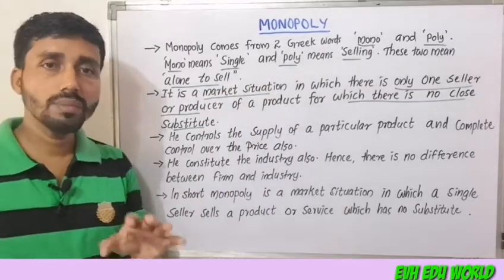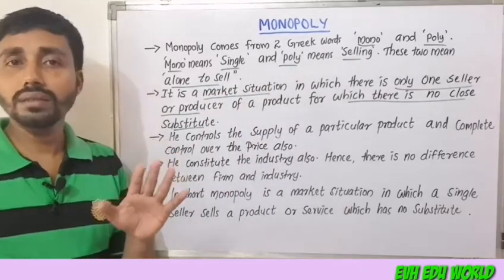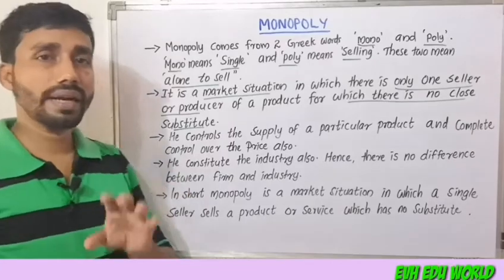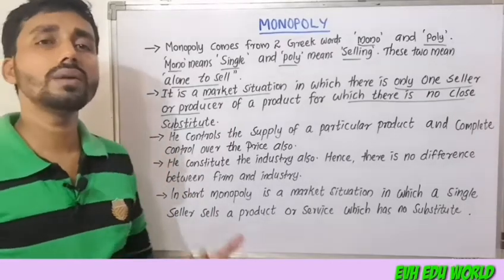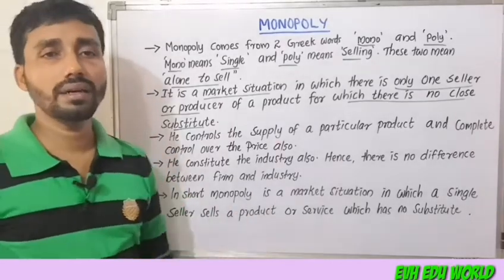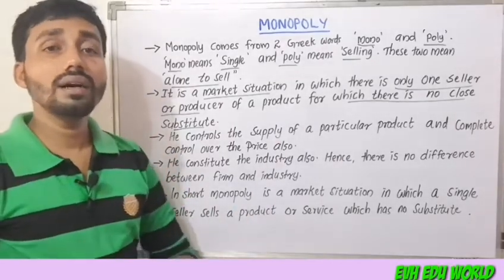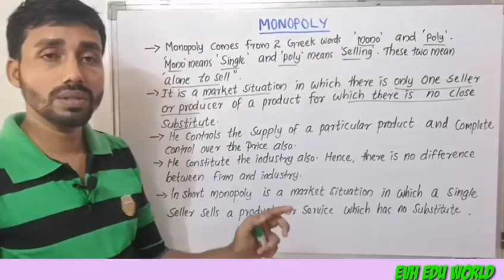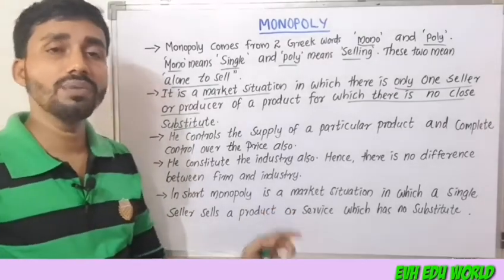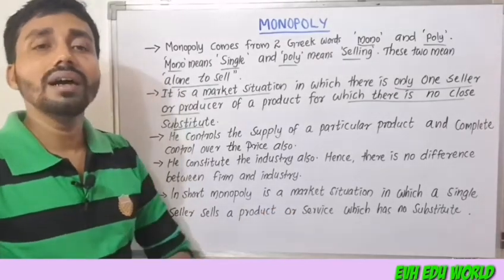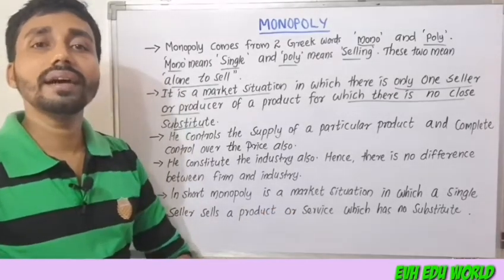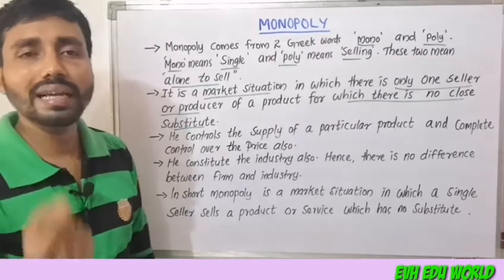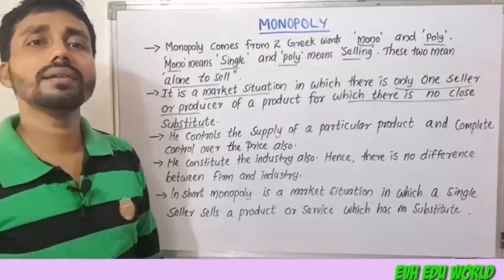For example, Indian Railway is completely controlled by the government. It is one example of a monopoly, like a railway.